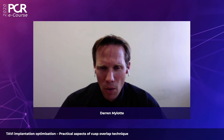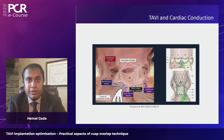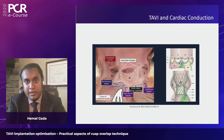I'm joined by Hermel Gata, interventional cardiologist and head of the structural heart program at UPMC Pinnacle in Harrisburg, Pennsylvania. To understand the cusp overlap technique, we must consider native anatomy. Knowledge of anatomy is key to mitigating conduction disturbances when implanting a transcatheter heart valve prosthesis like the Medtronic Evolute platform.